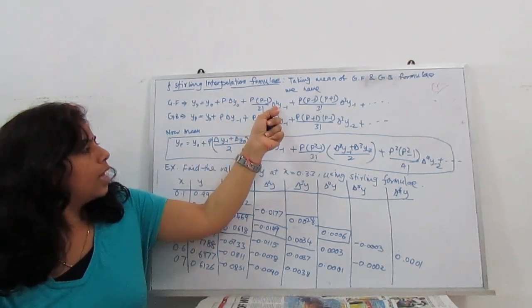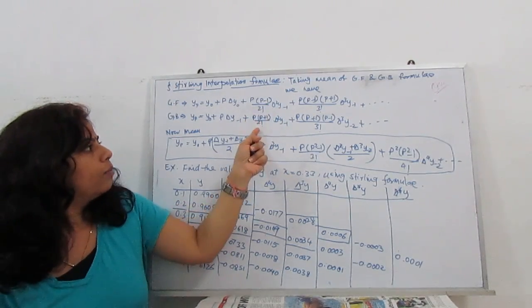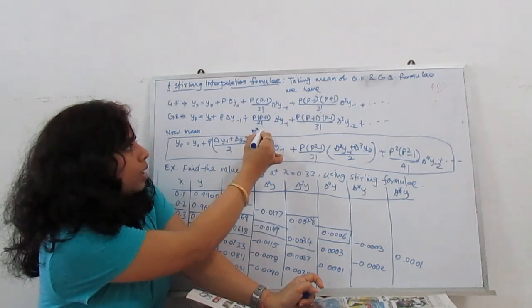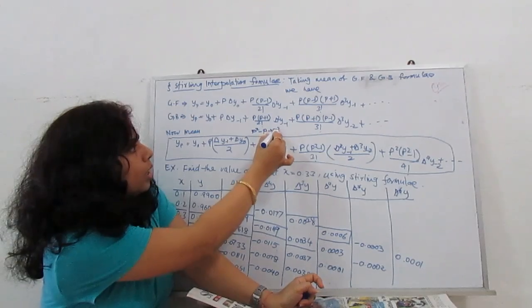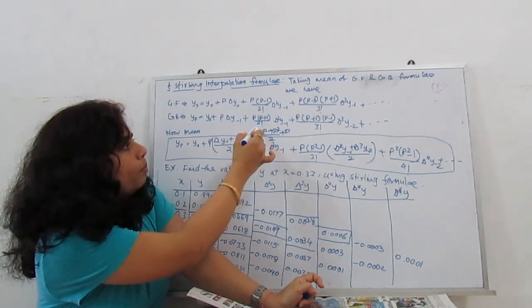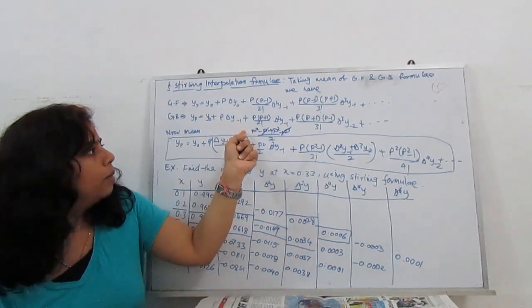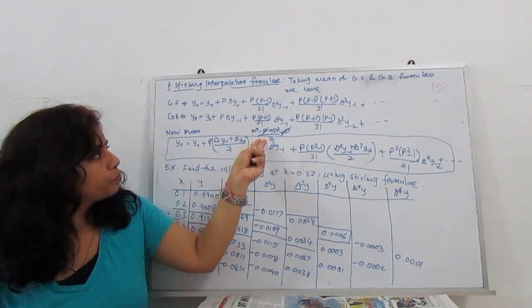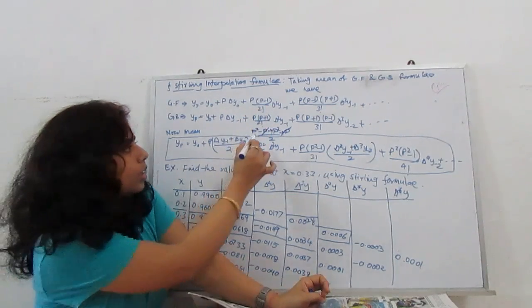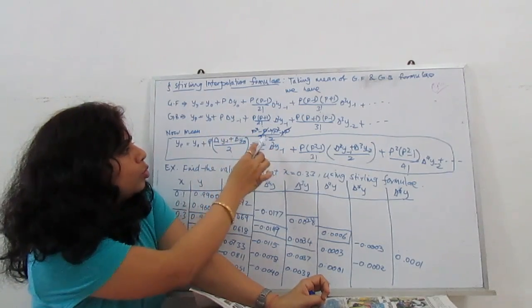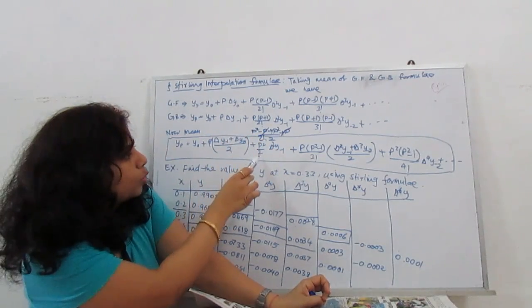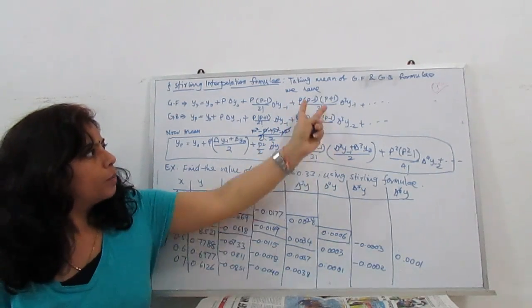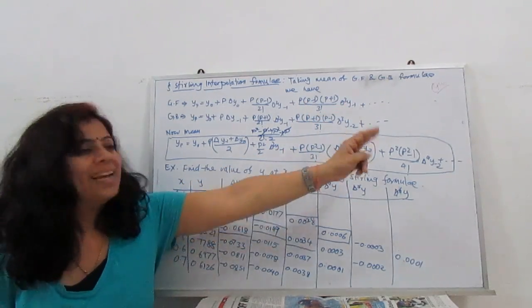For the Δ²y₋₁ term: adding p²-p from Gauss forward and p²+p from Gauss backward gives 2p², so 2p²/2 divided by factorial 2 simplifies to p²/2·Δ²y₋₁. Continuing this process term by term and taking the mean gives us the Stirling interpolation formula.